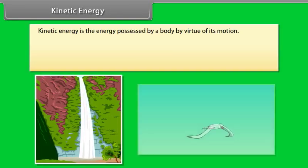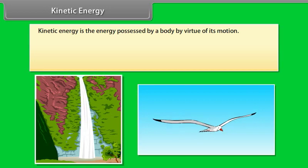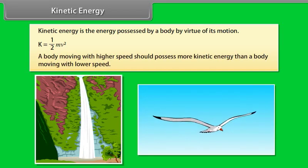Kinetic energy is the energy possessed by a body by virtue of its motion. Kinetic energy is equal to half mv square. Running water, flying bird are few examples of bodies possessing kinetic energy. It is logical that a body moving with a higher speed should possess more kinetic energy than a body moving with lower speed.